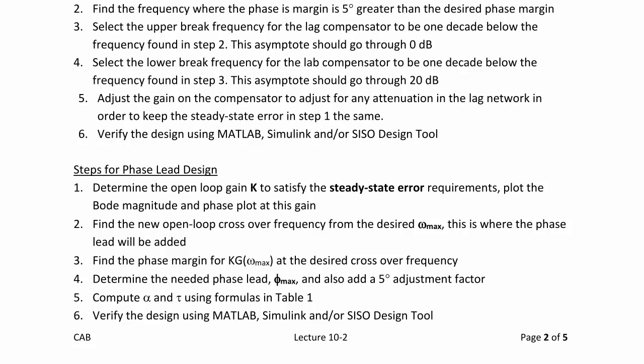Find the phase margin for kg at omega x at the desired crossover frequency. Determine the needed phase lead, phi max, and add a 5 degree adjustment factor. Then, compute alpha and tau by using the formulas in table 1. And step 6 is always to check your work by verifying the design using MATLAB, Simulink, and/or SISO design tool.